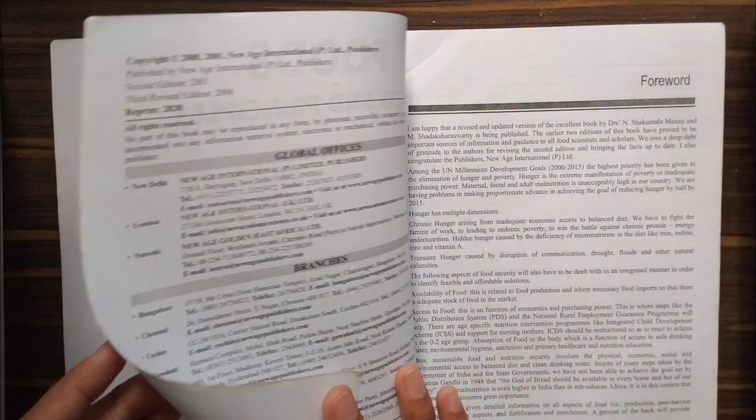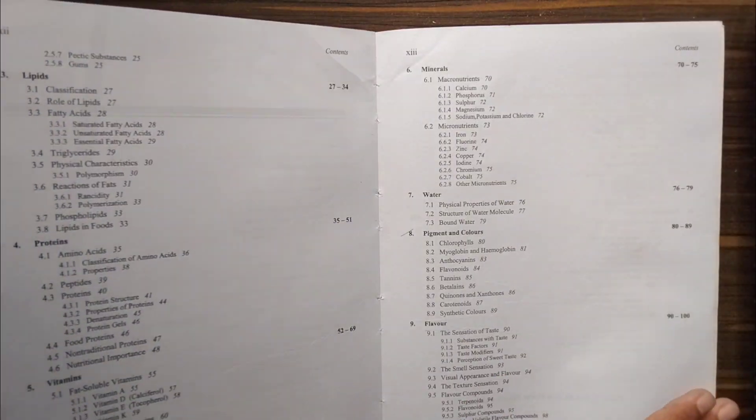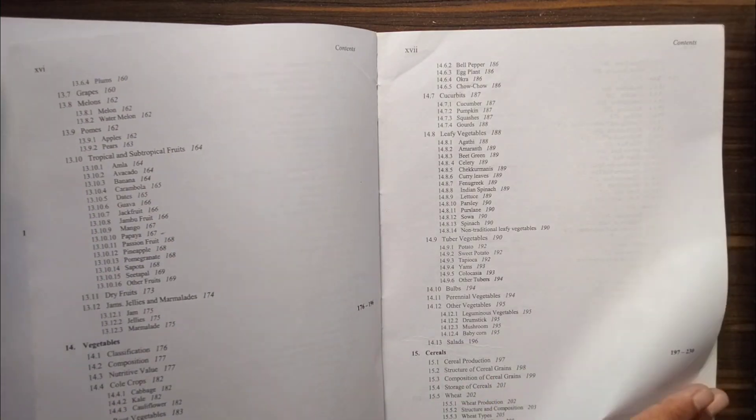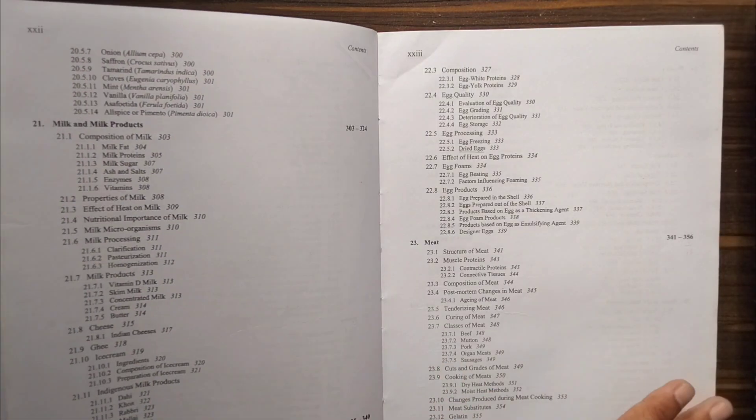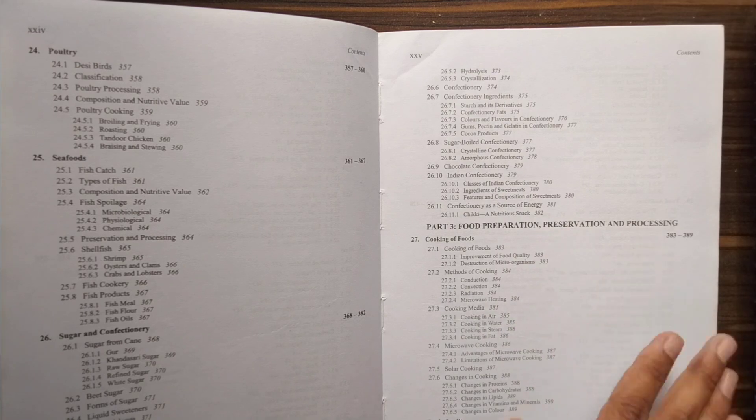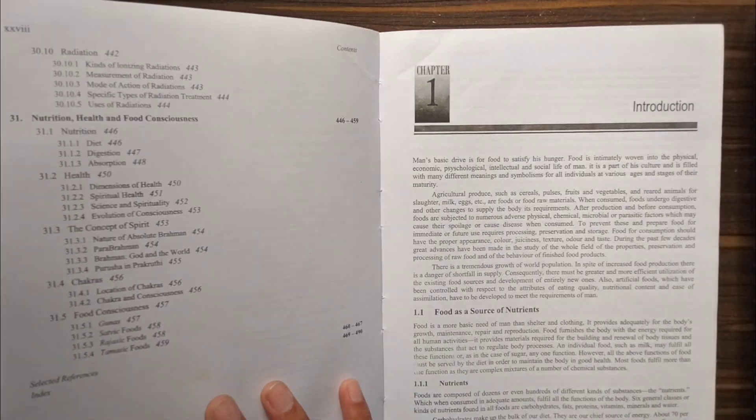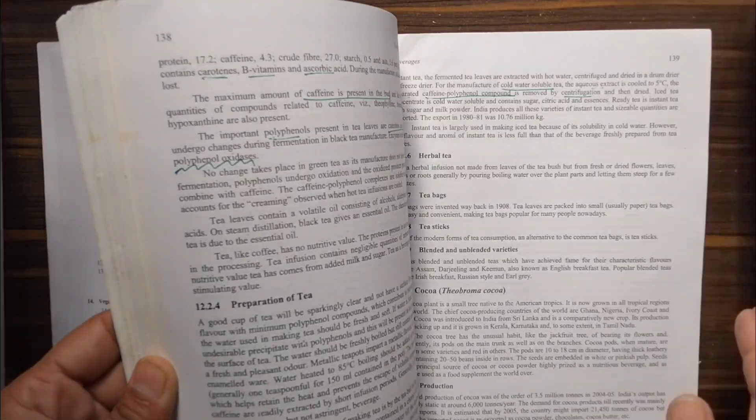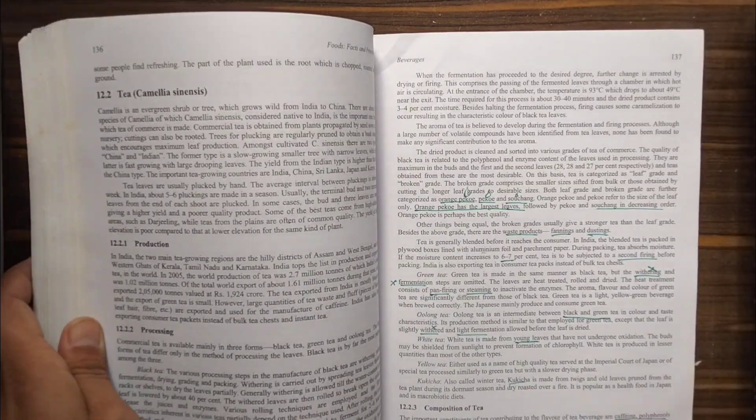First, let's talk about Food Facts and Principle. This book is an excellent resource for starting your GATE food technology preparation. It has a total of 31 chapters divided into 3 parts and provides a comprehensive guide to food technology. The book covers all the fundamental concepts including food chemistry, food microbiology, food processing, and food engineering.